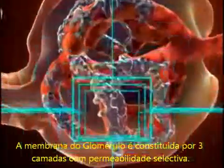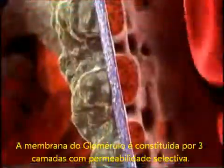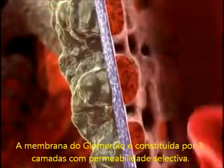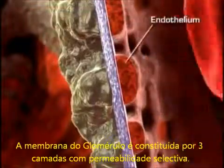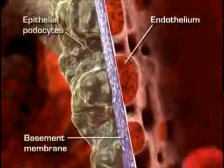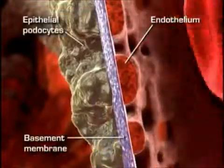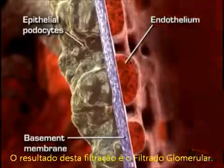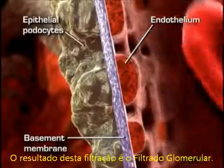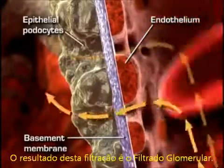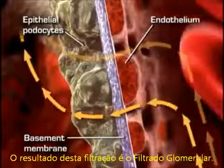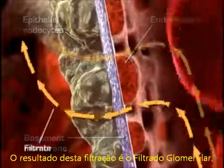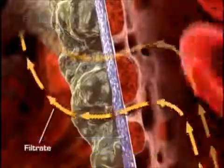Plasma-like fluid is filtered from the capillary blood into Bowman's space through the glomerular filtration membrane. The glomerular filtration membrane consists of three layers of capillary wall: the endothelium, the basement membrane, and the epithelium. This membrane allows some particles from the blood to pass through, but not all. The fluid that is filtered from the capillary blood into Bowman's space is called filtrate and forms the primary urine.